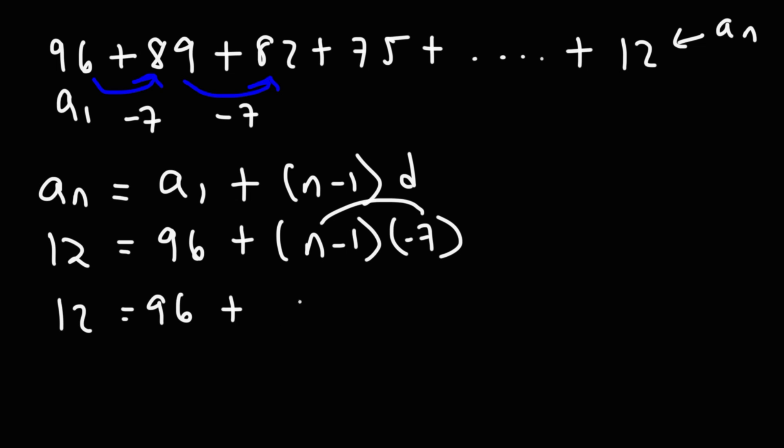Distributing negative 7 to n minus 1, that's going to give us negative 7n plus 7. Negative 1 times negative 7 is positive 7. And then we can add these two numbers. 96 plus 7 is 103.